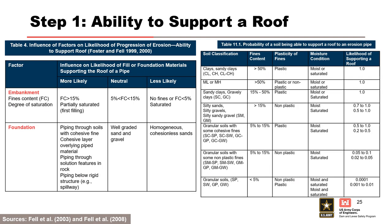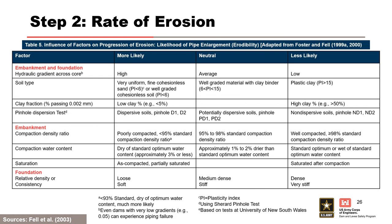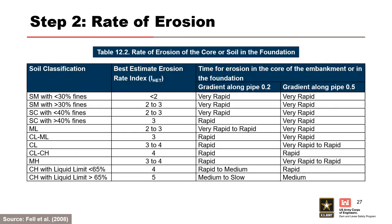Step one is to assess the ability of the surrounding soils to support a roof, utilizing the previous evaluation from the progression phase. In step two, we assess the rate of erosion. Factors influencing the likelihood of pipe enlargement are shown in a table. Fell et al. 2008 also provided qualitative times for erosion for gradients of 0.2 and 0.5 along a pipe as a function of soil classification. In this table, erosion resistance increases from top to bottom, and therefore the rate of erosion decreases from top to bottom.